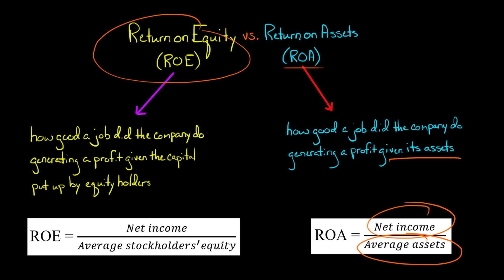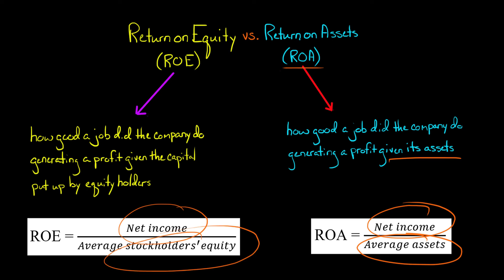Return on equity, on the other hand, takes the company's net income and scales it by the average stockholder's equity. It tells you how good a job the company did generating profit given the capital that was put up to finance the firm by the company's equity holders.